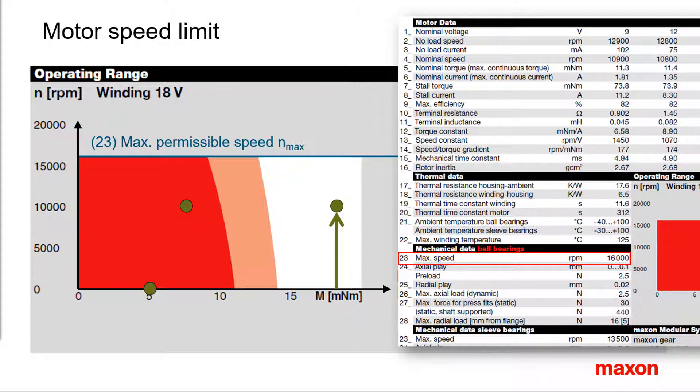The speed limit of Maxon motors can be found in line 23 in the mechanical data section or in the diagram.